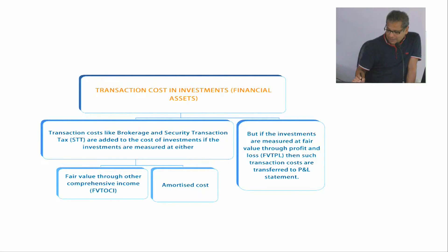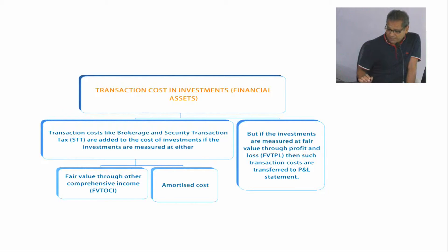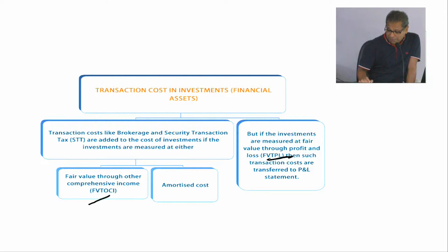As per Ind AS 109, there are three types of financial assets. One is the financial asset measured at FVTPL — fair value through P&L. Another is FVTOCI — measured at fair value through other comprehensive income.